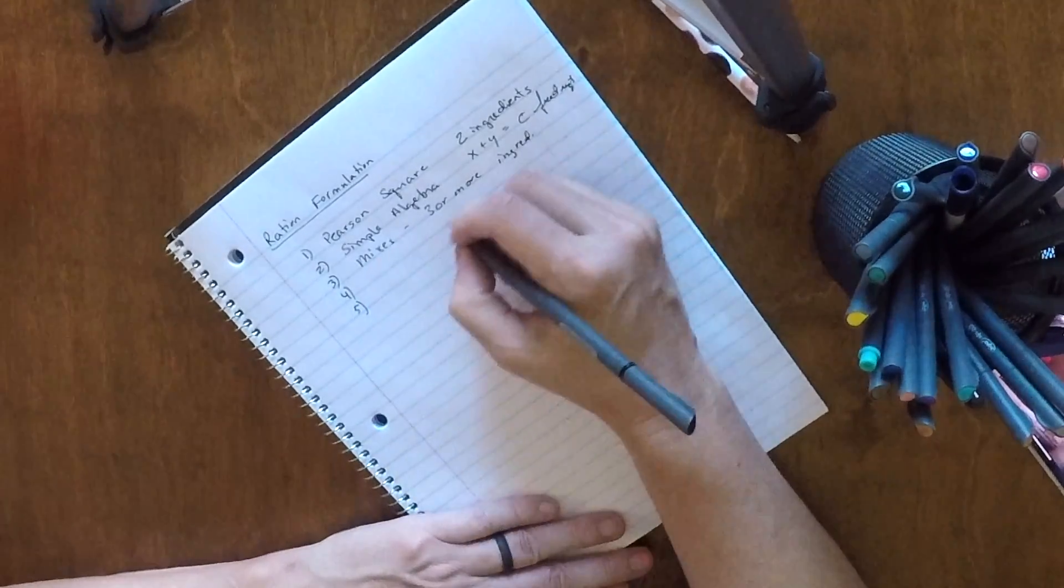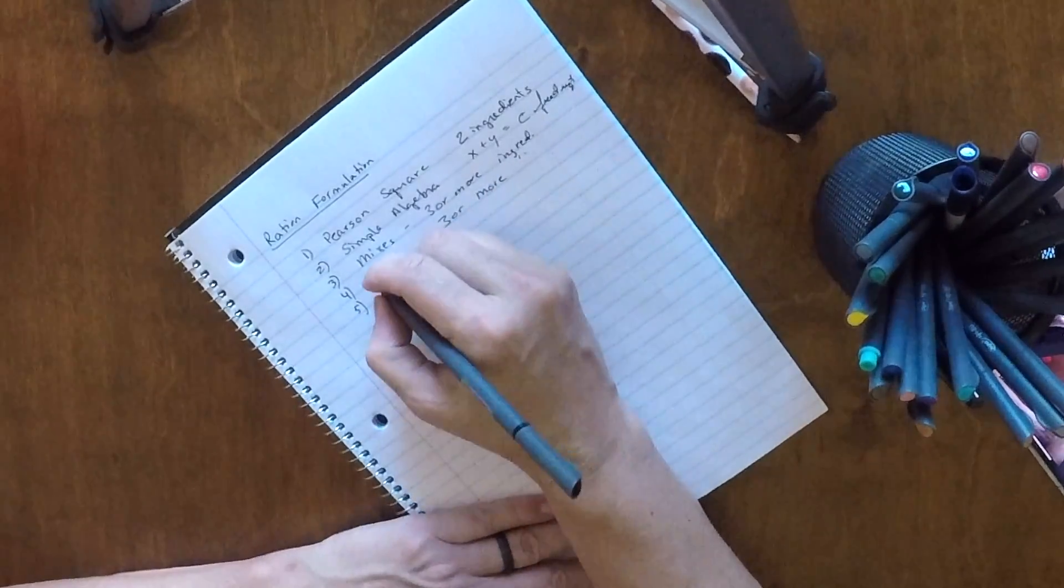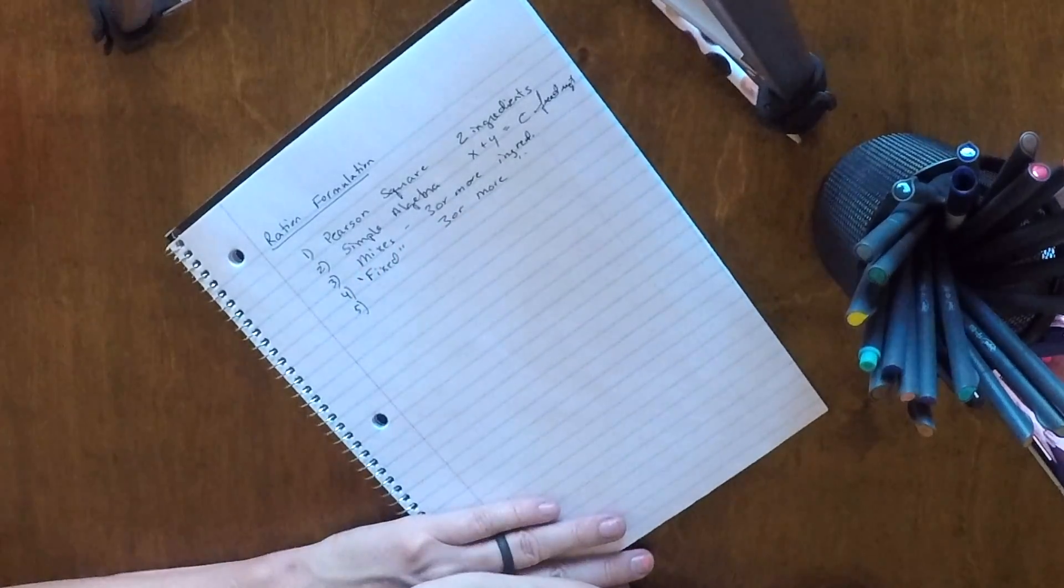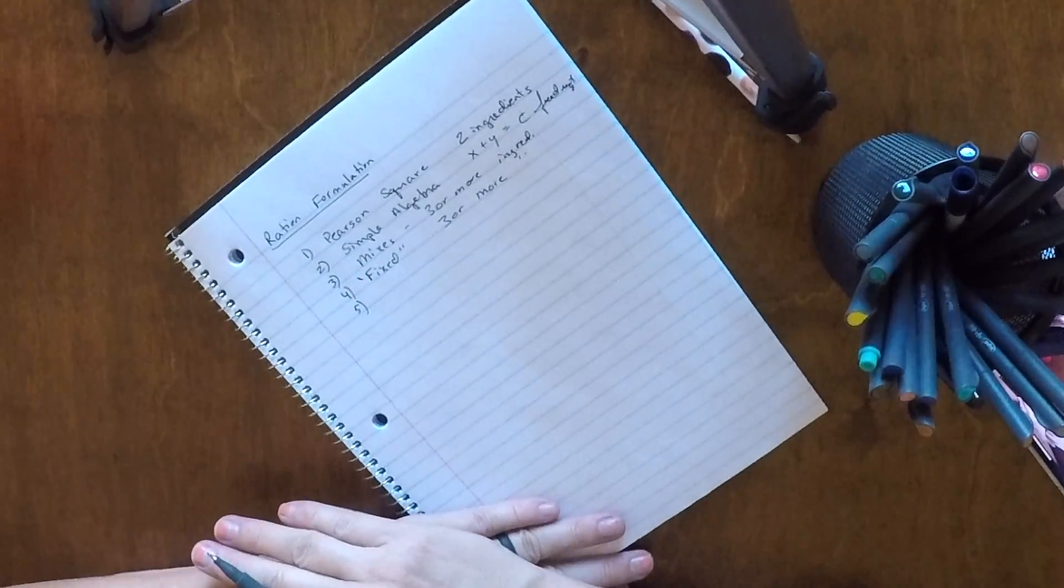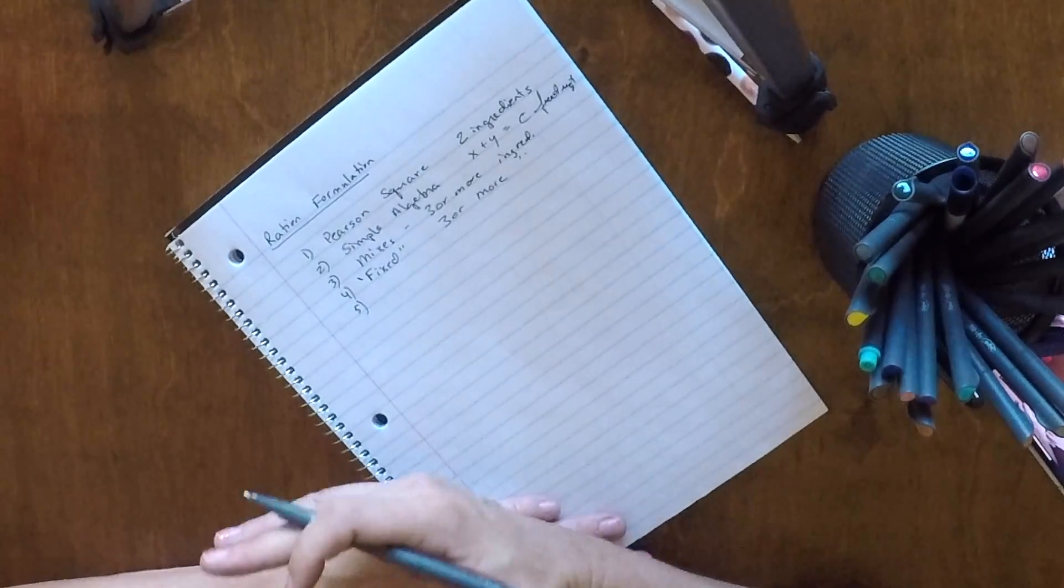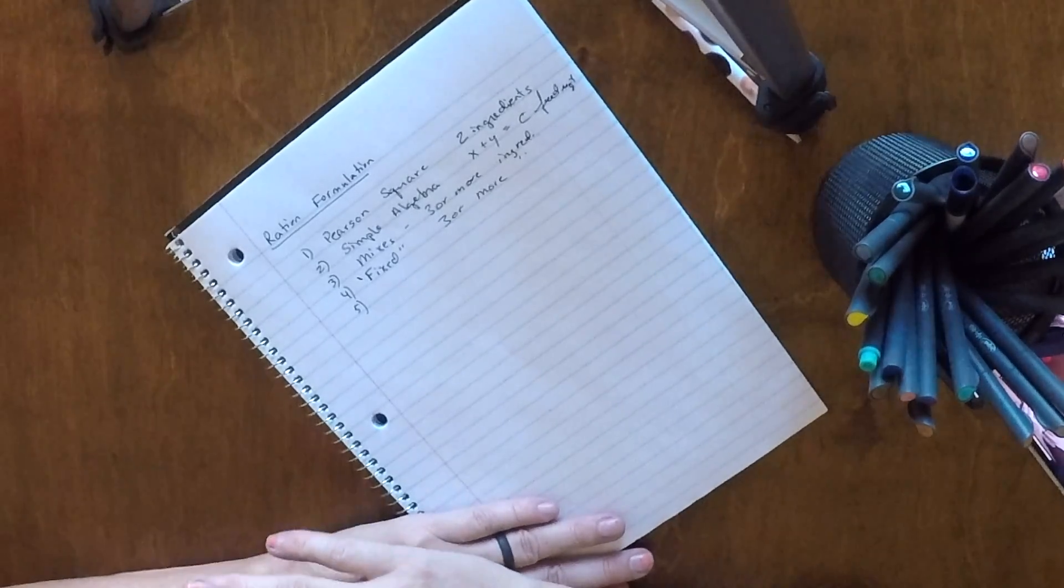Another one we use for three or more ingredients is fixed ingredients. And that means when they're fixed, they are set to a specific level and there is no changing of it. So we can account for it in our algebra formulas pretty easily by treating stuff as fixed ingredients.